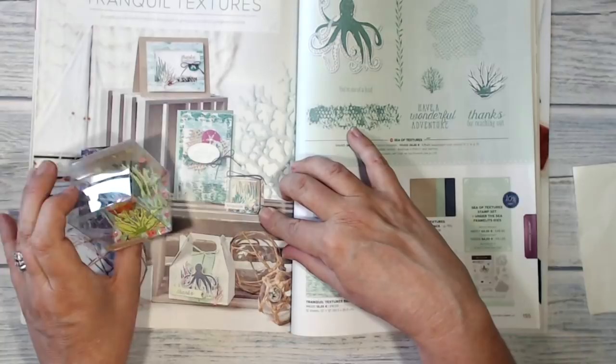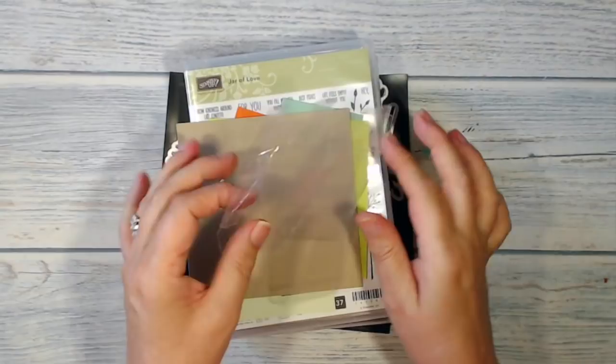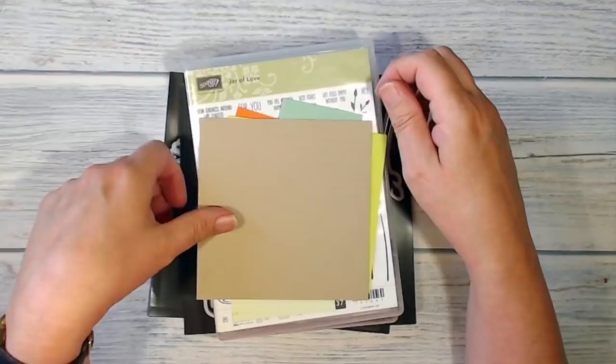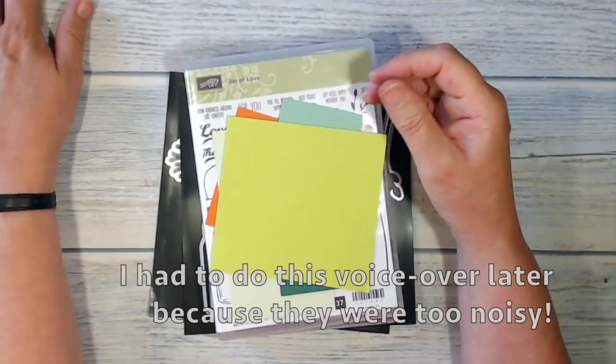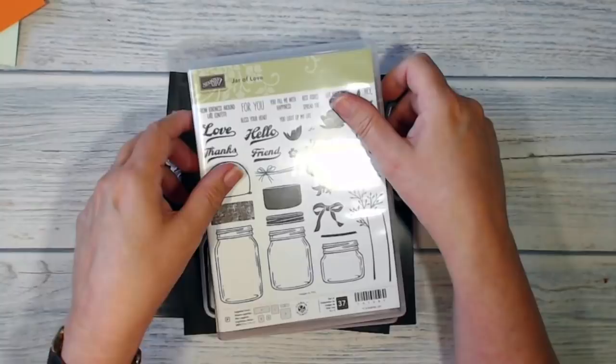Here are the supplies that I'm going to be using for my project today. I've got a clear tiny treat box that's going to be my aquarium. And then I've got a piece of crumb cake and some lemon lime twist, some mint macaron, Tranquil Tide, soft sea foam and some pumpkin pie. This is a great scraps buster this one.